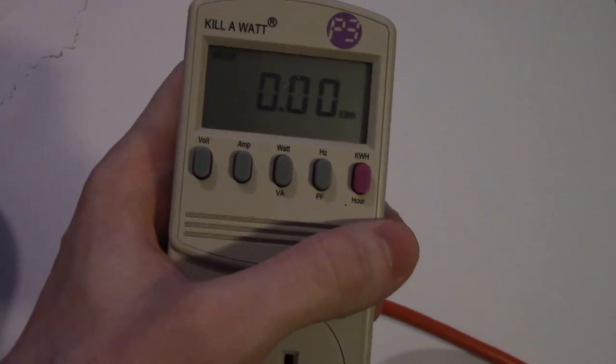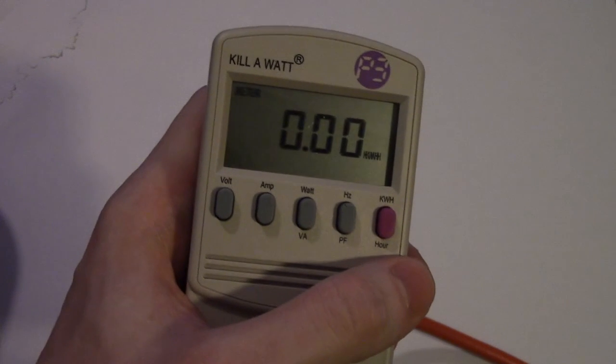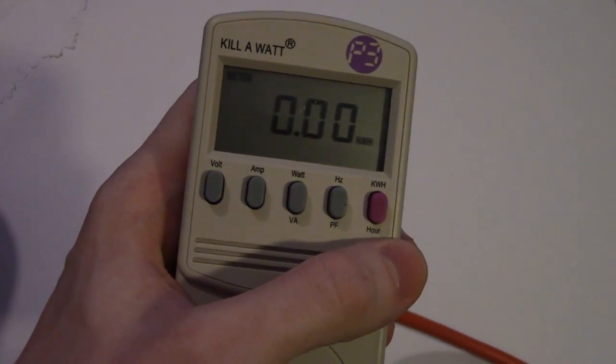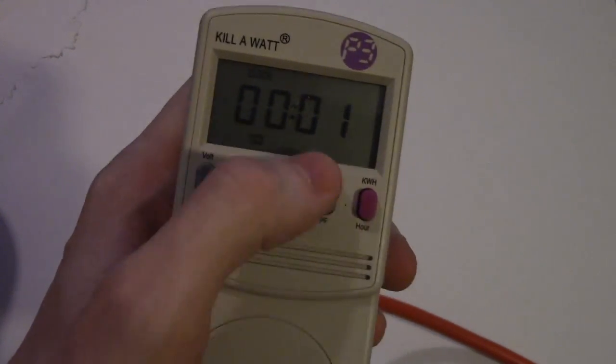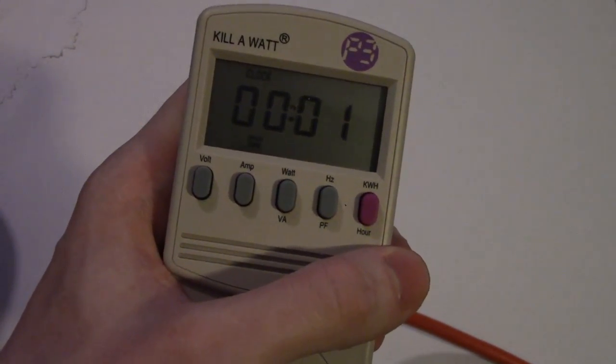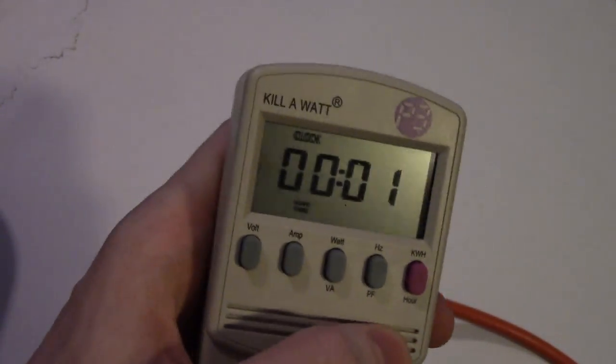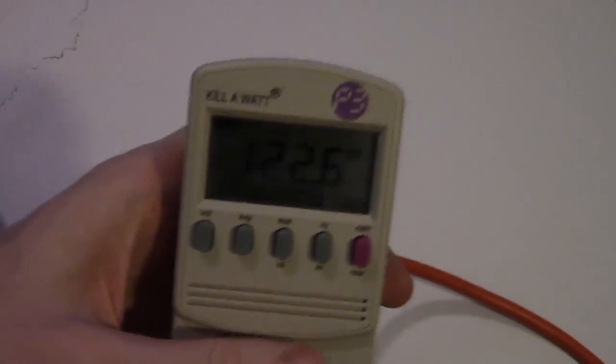The very last one is our kilowatt hours measurement. The first option gives us our kilowatt hours consumed since the device is on there. Then we also have a clock, basically a timer telling us how long this has been plugged in for.